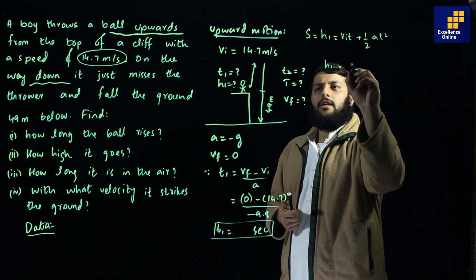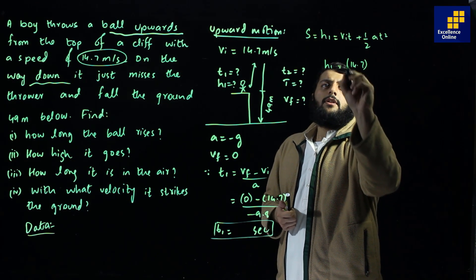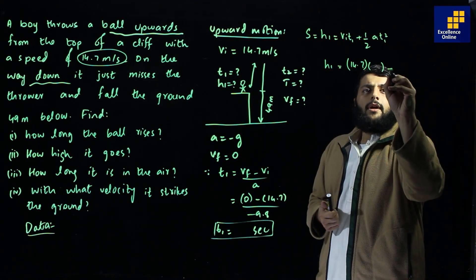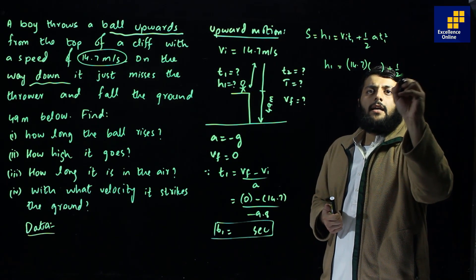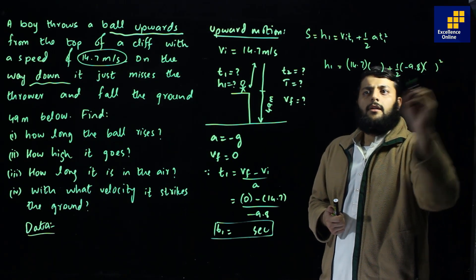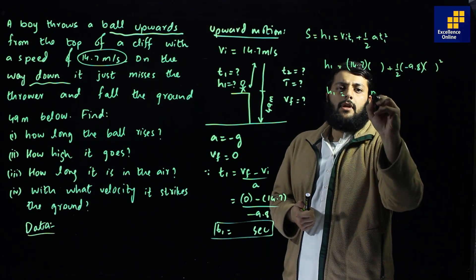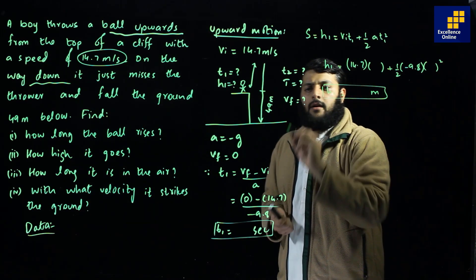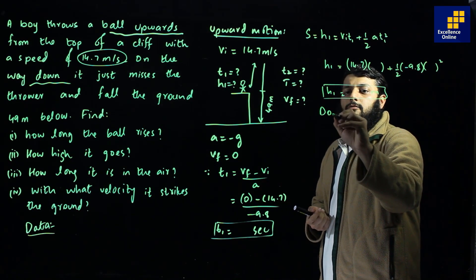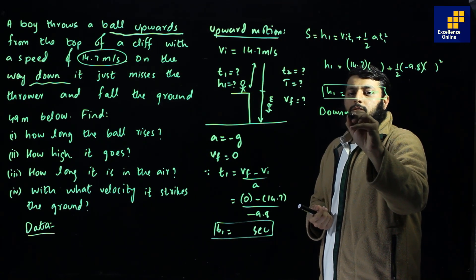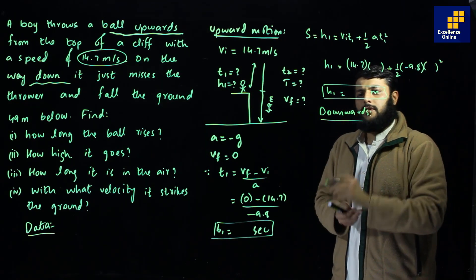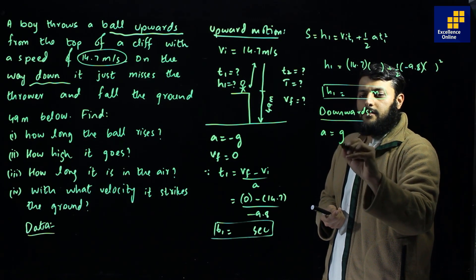Using the kinematic equation, h1 = vi·t1 + ½·a·t1², with acceleration −9.8 and the value of t1 already calculated, we get h1 in meters. The ball then comes back down, so for the downward motion, acceleration is +g and initial velocity vi is zero.